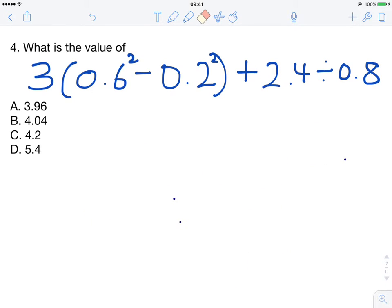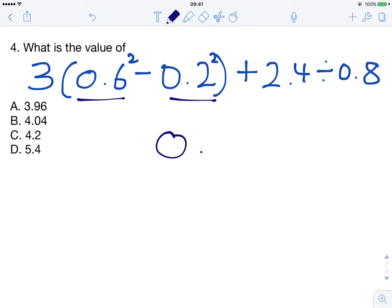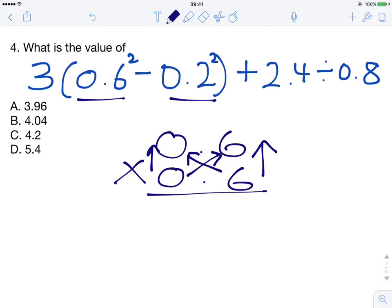What we'll do first is the squares that are here and here. So 0.6 squared is equal to 0.6 times by 0.6. And we can do this the same way that we do long multiplication. So we'd write it out as 0.6 times 0.6 multiplied.